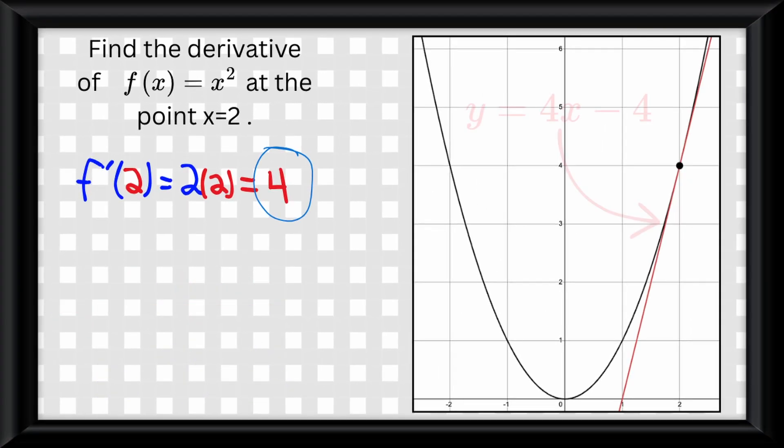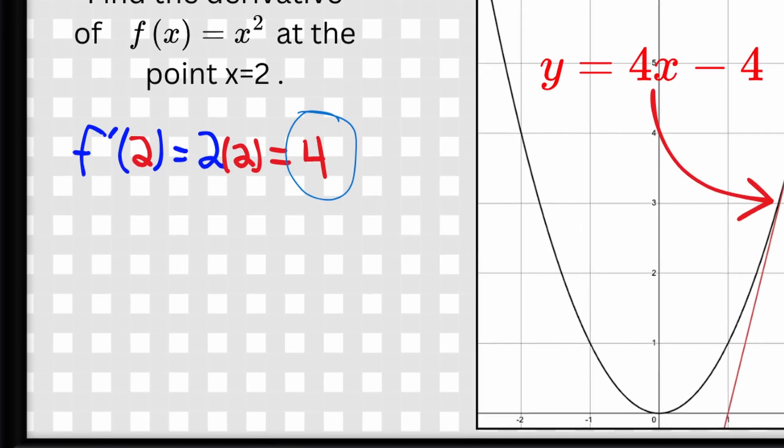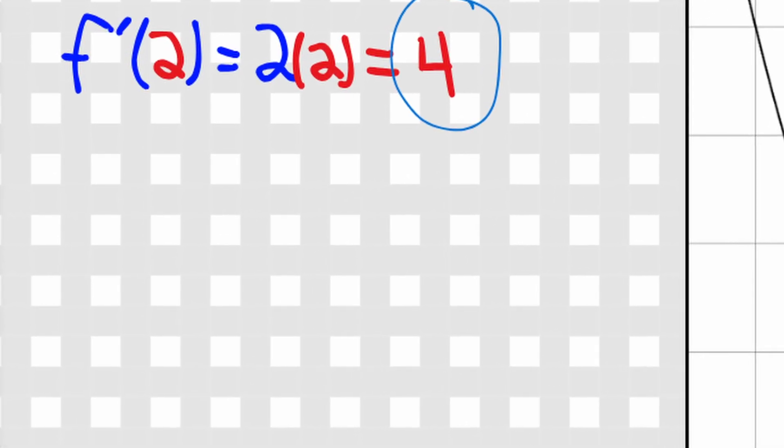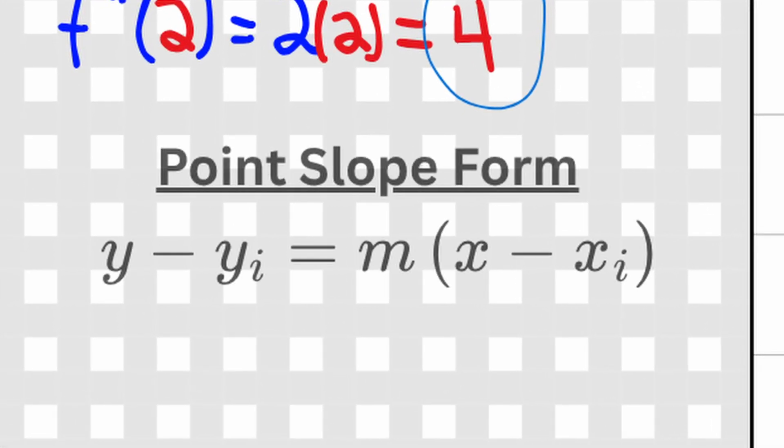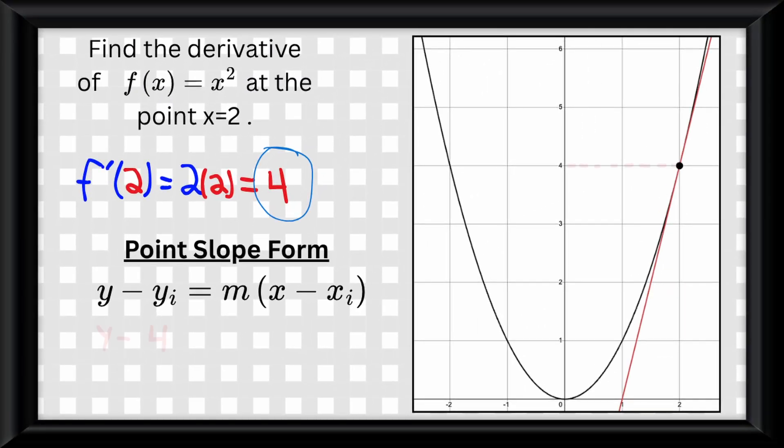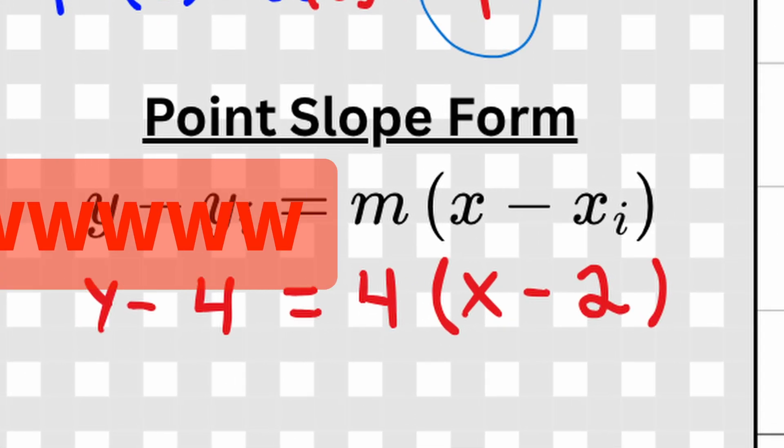So, here's a question. How do we find the equation for this tangent line function? This is where we use something I think it is fair to say all math students hate, and I personally have immense PTSD over. Point slope form. It's actually pretty simple. It's just y minus your y coordinate is equal to the derivative multiplied by x minus your x coordinate. But still, ew.